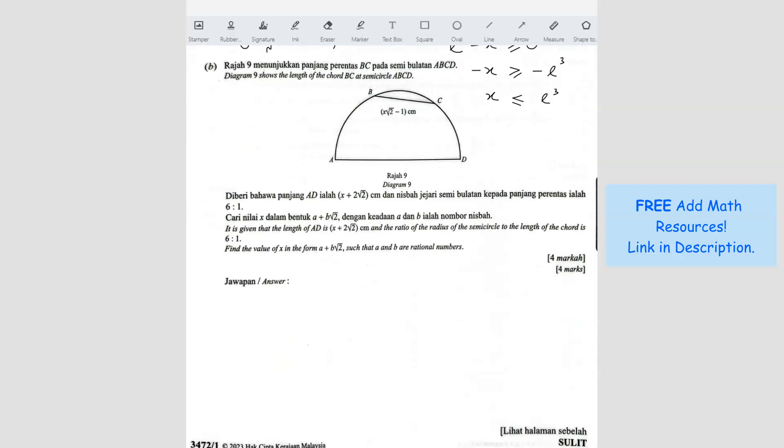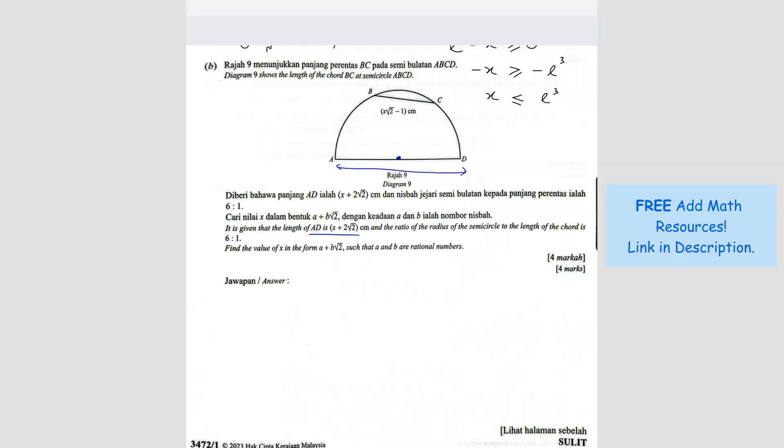Now question B. Diagram 9 shows the length of chord BC at a semicircle. So this is a chord here. It is given that the length AD is this. So AD is the diameter. So O is the center here. The diameter is x plus 2 root 3 over 2. The ratio of the radius of the semicircle to the length of chord is this ratio. So the radius, let's find the radius. Radius is x plus 2 root 3 over 2, over 2. This is the radius because this is the diameter.